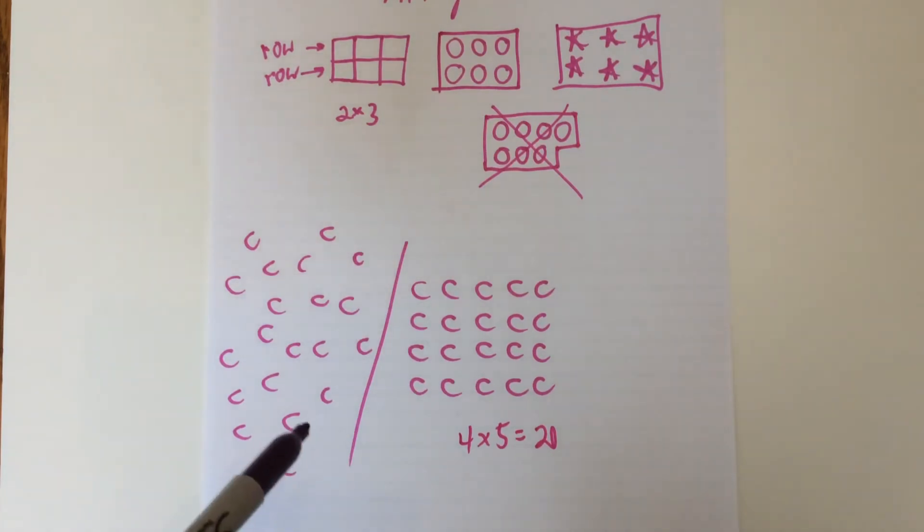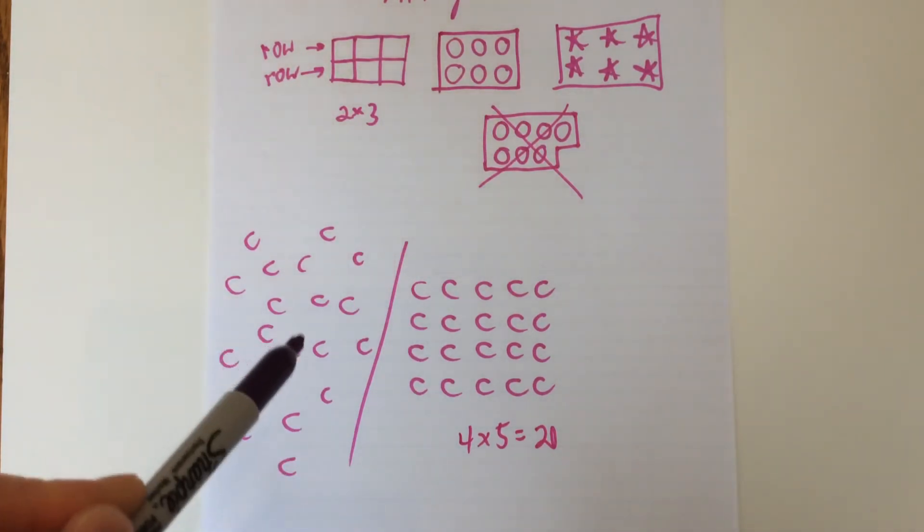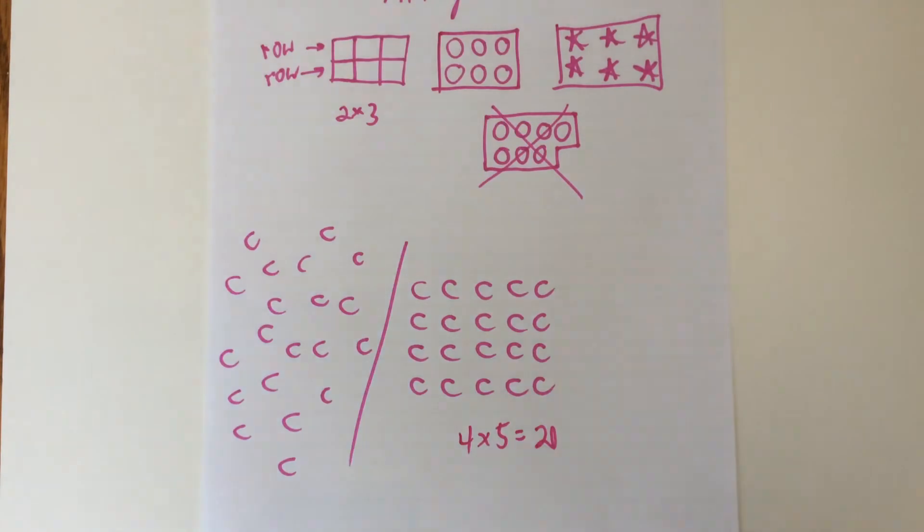Rather than having something 1, 2, 3, 4, 5, 6, 7, okay? So it's just an easier way to do some multiplication, and like I said, it will be helpful with division as well.